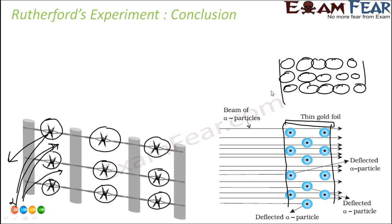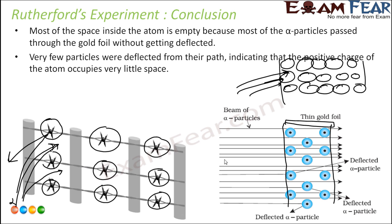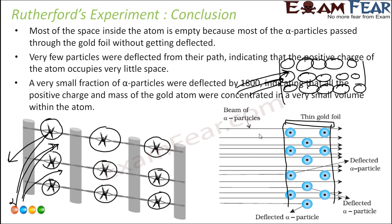If the atom were like a solid wall of balls, most particles would be deflected back. But since most passed through, most of the space inside the atom is empty. Since a few particles were deflected, there is something very hard and dense at the center — the positive charge occupies a very small space, concentrated in a tiny volume.